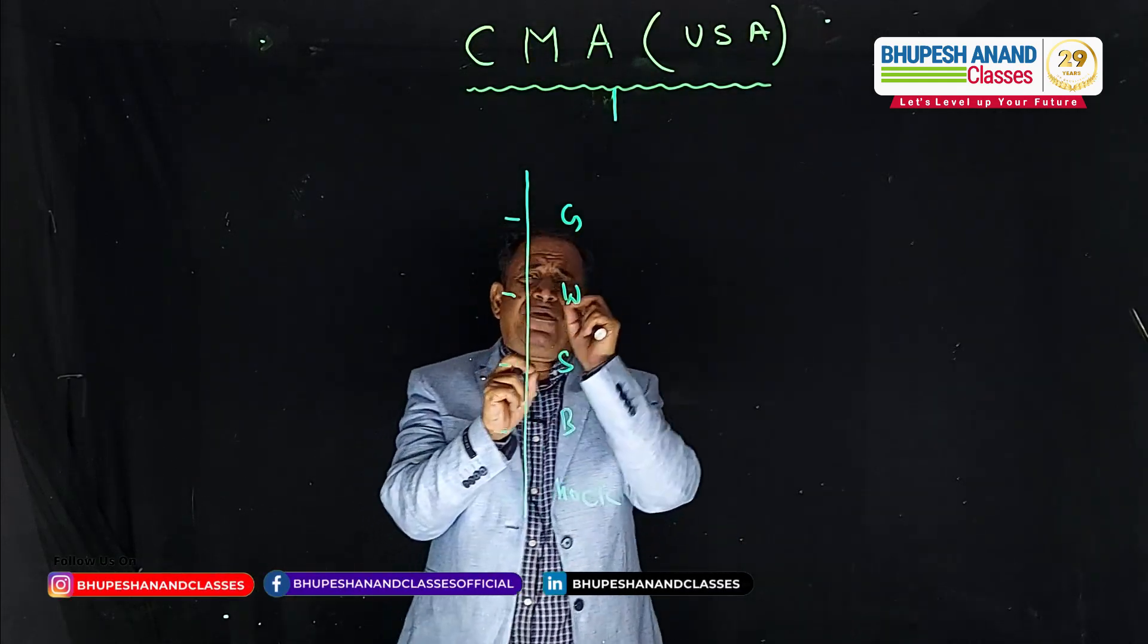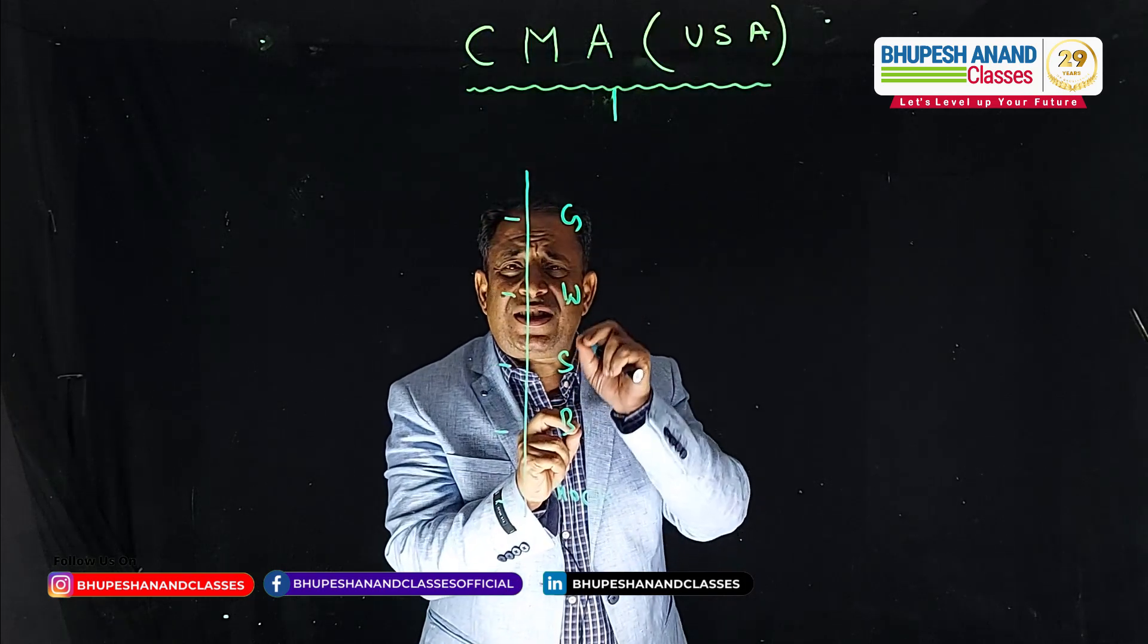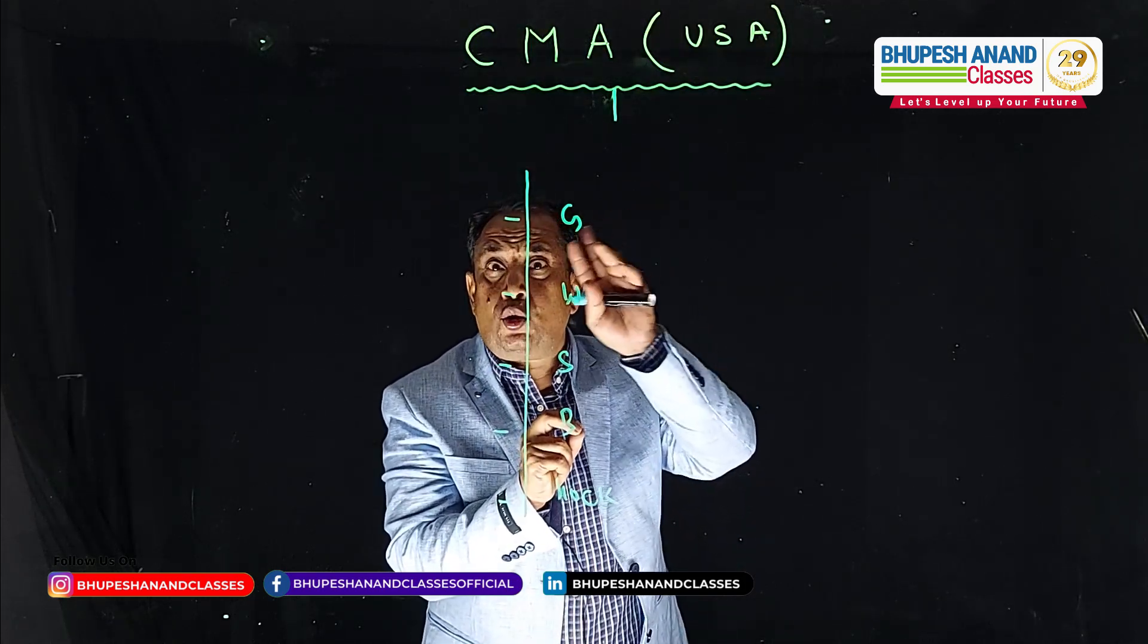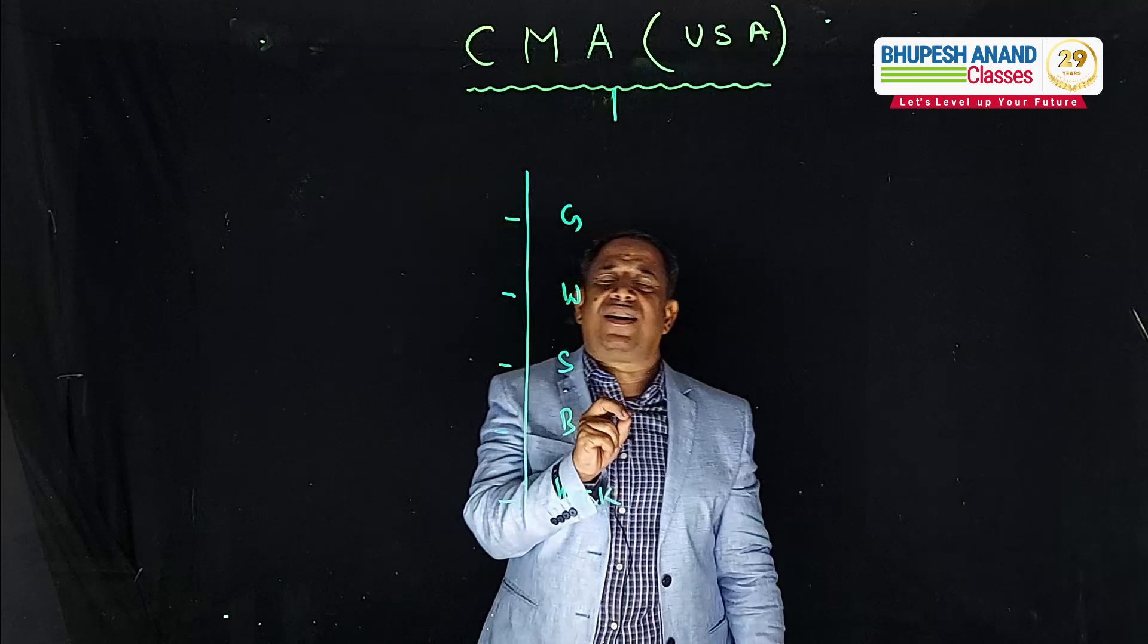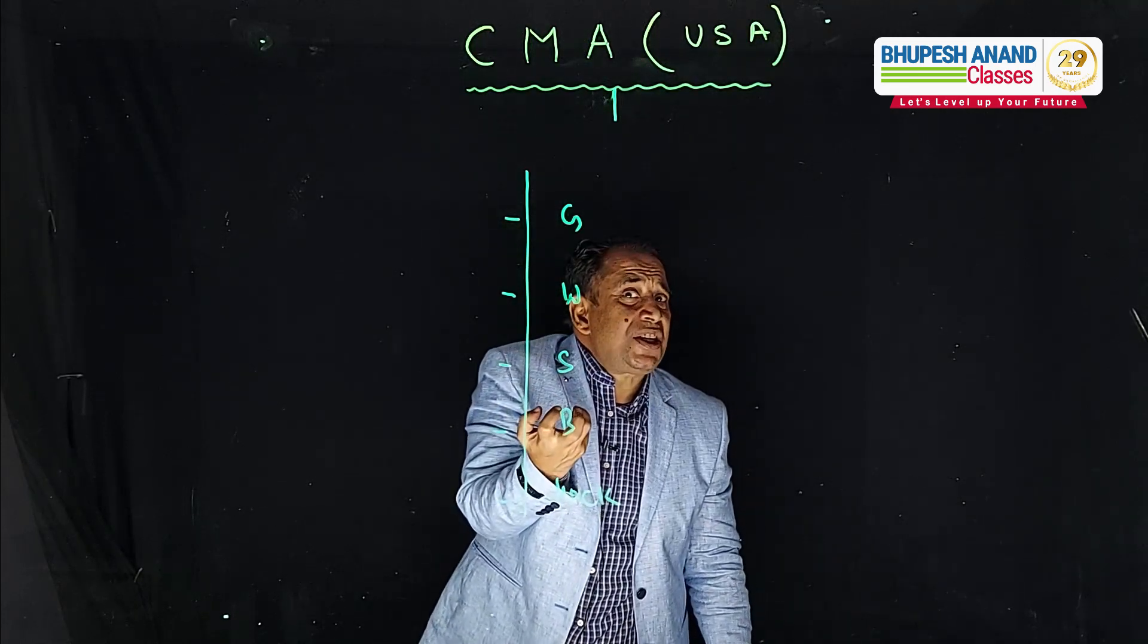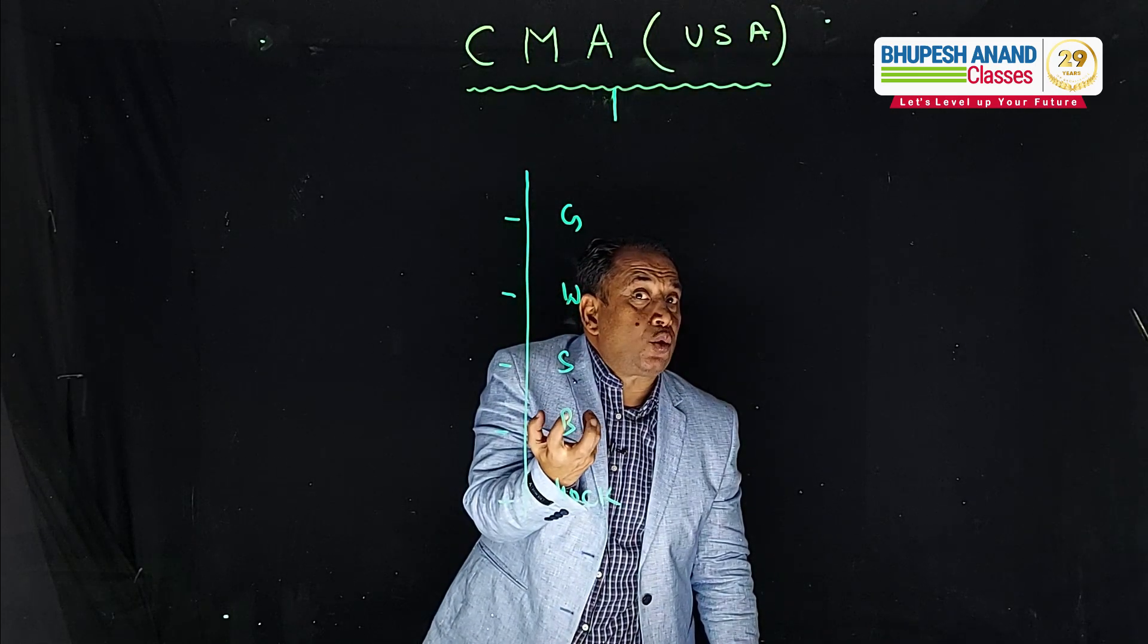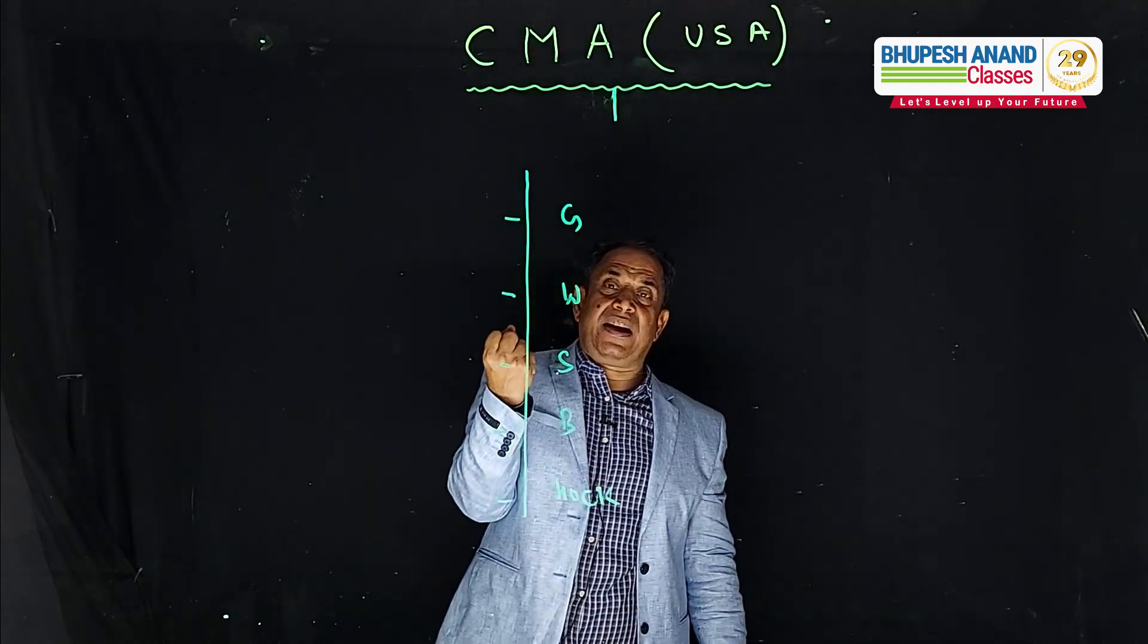For example, financial statement analysis, CMA USA part 2, section A, Glam ka jayada achha laga. Wailer may be bade eche eche baate jayase CMA USA part 2 ka, section D risk management jayada achha laga mujhe Wailer ka.